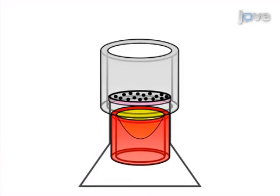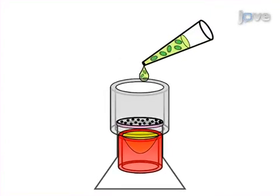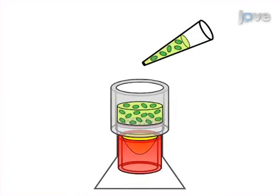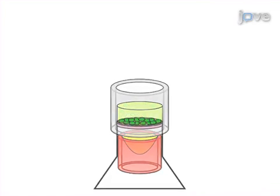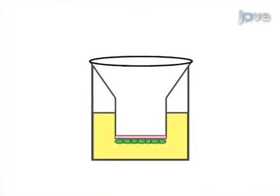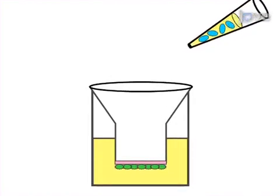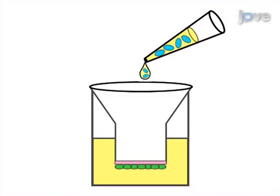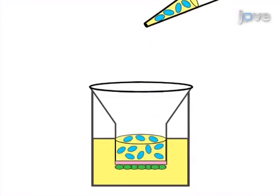Seat the astrocyte cells on the inverted insert so that they adhere to the abluminol surface. Then, remove the tubing and place the insert in its normal orientation inside a medium-filled well. Next, seat the endothelial cells into the luminal compartment of the insert and co-culture with the opposing astrocytes.